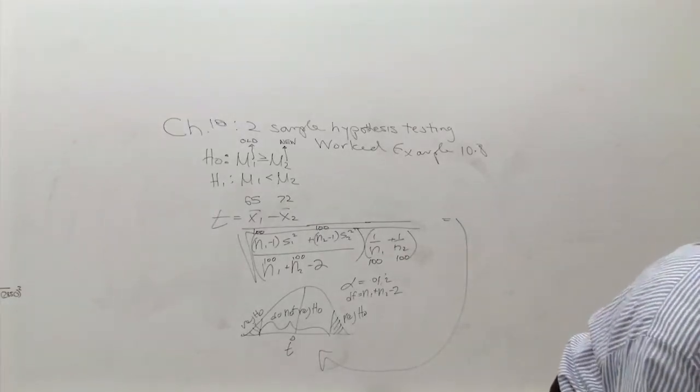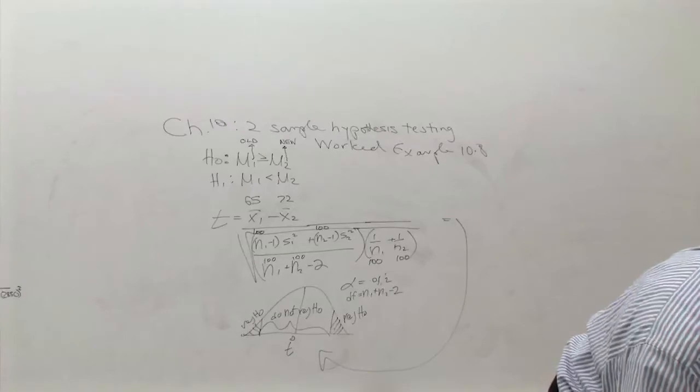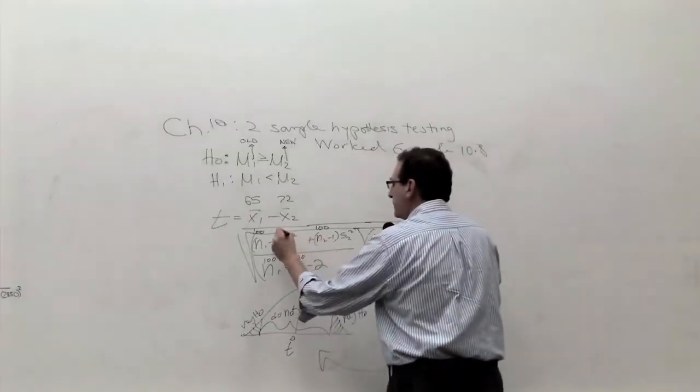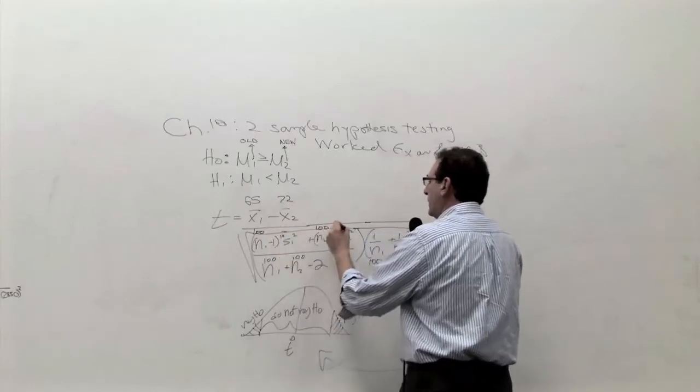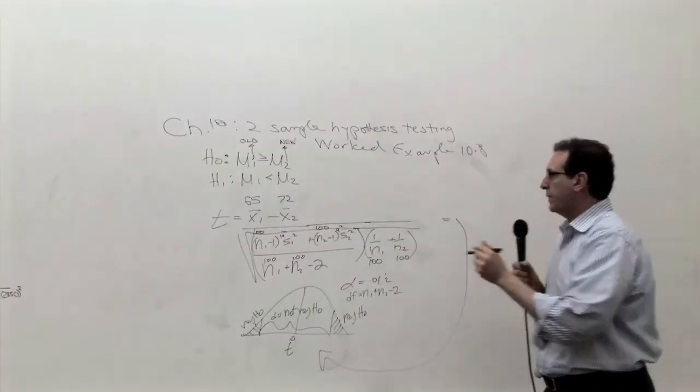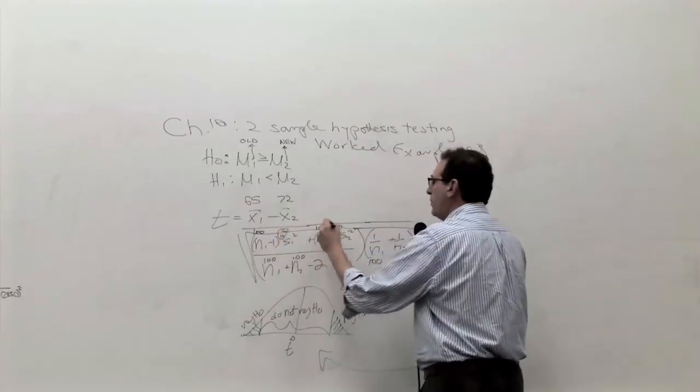And finally, the standard deviations were for the old machine was 10, and the new machine was 9. So this will be 10 squared, and this will be 9 squared. Remember, squared is an important part of it.